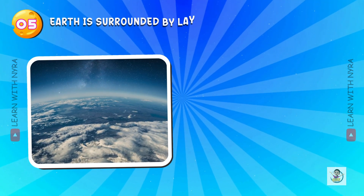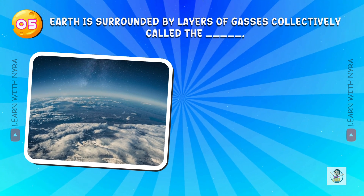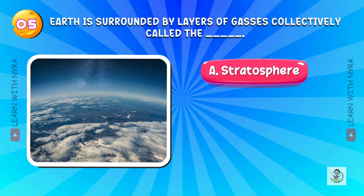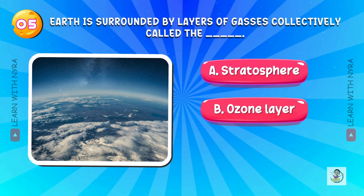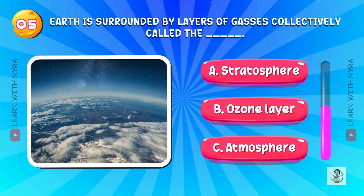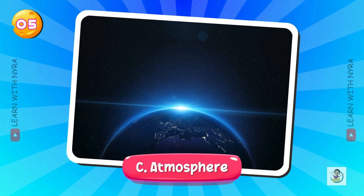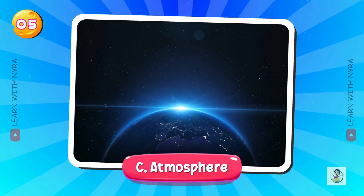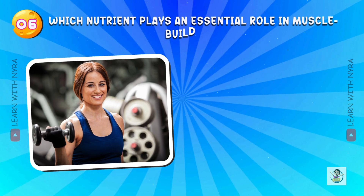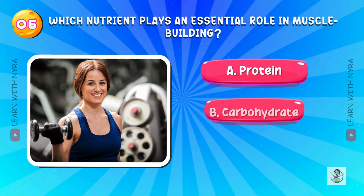Earth is surrounded by layers of gases collectively called the A. Stratosphere, B. Ozone layer, C. Atmosphere. And the answer is C. Atmosphere.